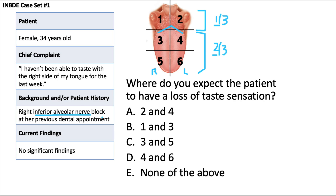It's much more uncommon to affect taste, though not impossible. The chorda tympani of the facial nerve, cranial nerve 7, hitchhikes along the lingual nerve branch and can be affected by local anesthetic in rare cases — this is called iatrogenic ageusia, or loss of taste. It would be nearly impossible to anesthetize the glossopharyngeal nerve with an inferior alveolar nerve block. Since the chorda tympani could be affected, that points to the right anterior two-thirds of the tongue, giving us answer choice C: regions three and five.